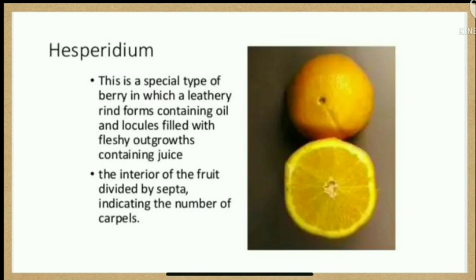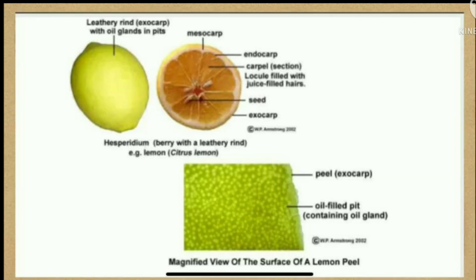Hesperidium: this is a special type of berry in which a leathery rind forms containing oils and locules filled with fleshy outgrowths containing juice. The interior of the fruit is divided by septa indicating the number of carpels. Image of hesperidium showing leathery rind and magnified view of the surface of a lemon peel.